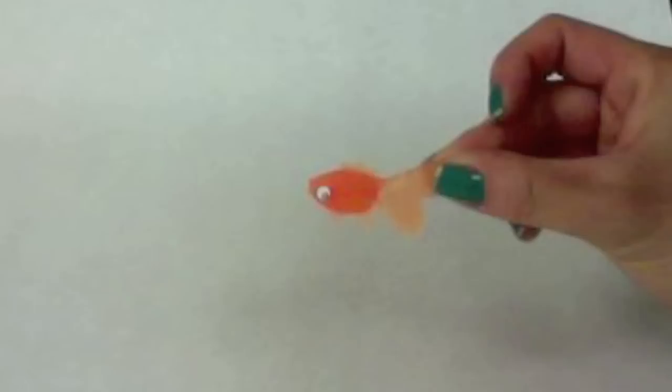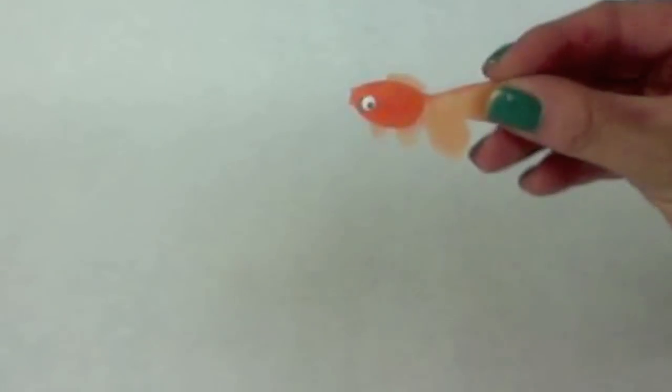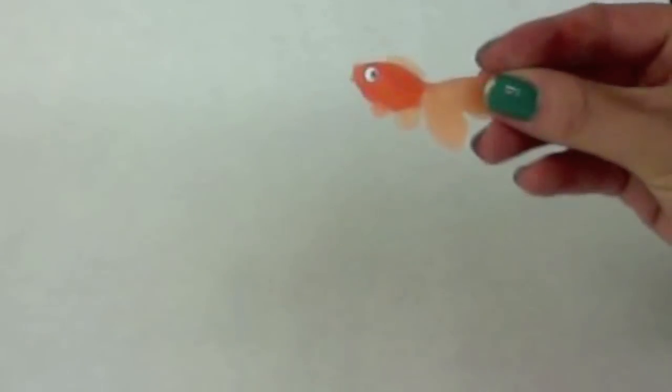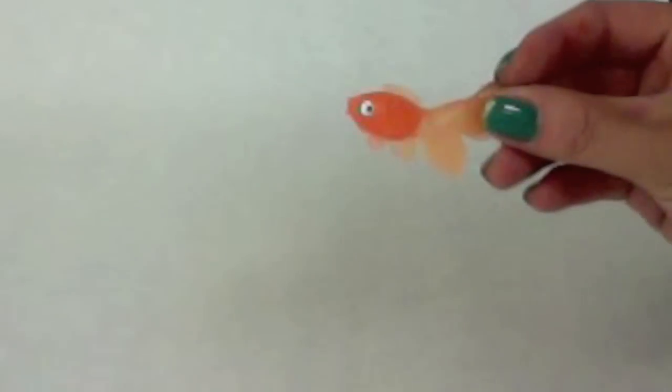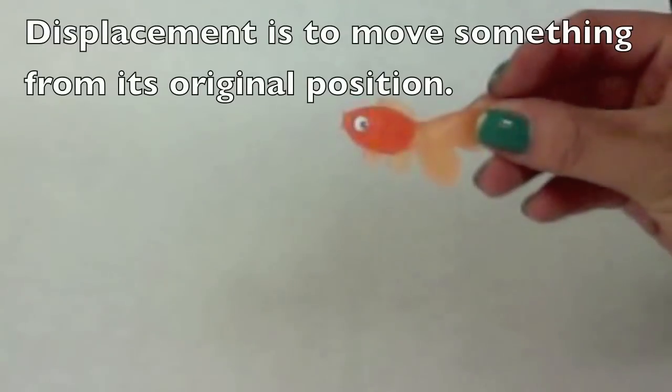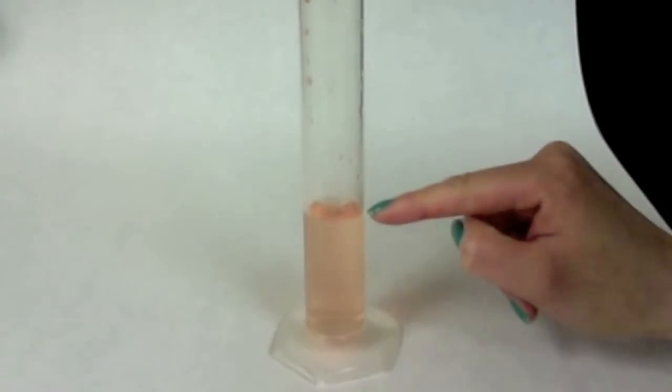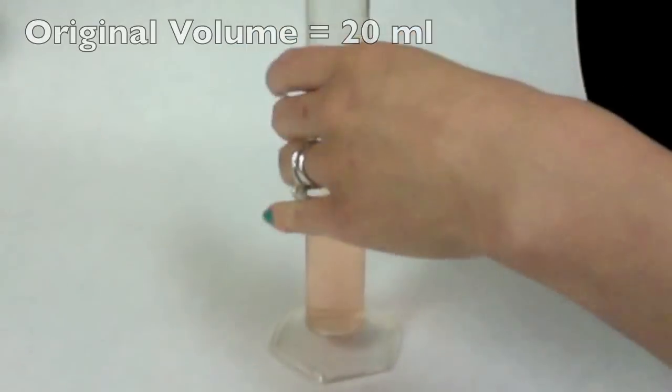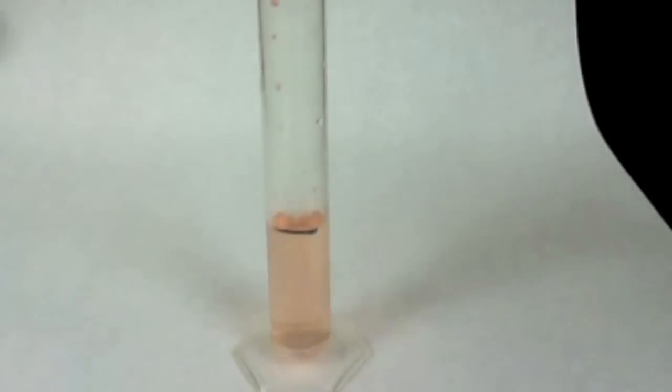You might want to find the volume of an irregularly shaped object like this plastic goldfish. I can't necessarily measure it and then calculate its volume geometrically because it has so many odd angles and curves. The method you have to use is called volume through displacement. Displacement means to move something. So, you'll need a graduated cylinder with some water. The water here has been dyed so you can see it better. Currently, the level of the water is 20 milliliters. I'm going to mark this so you can see it. So, here is the original water level.